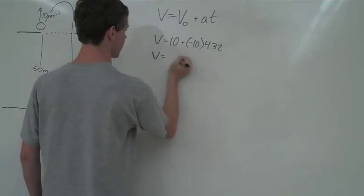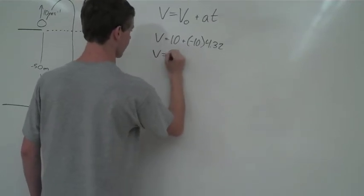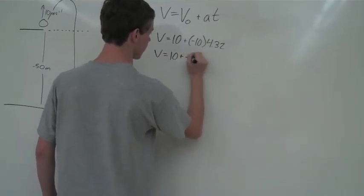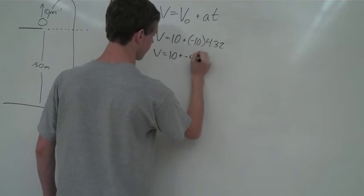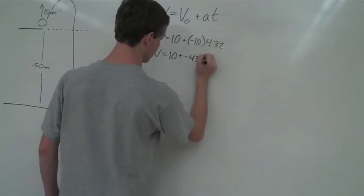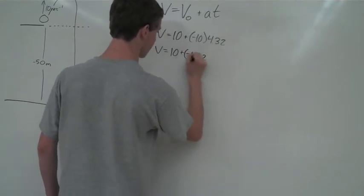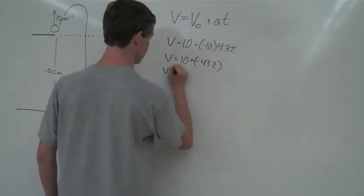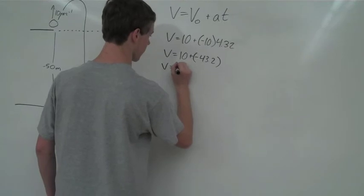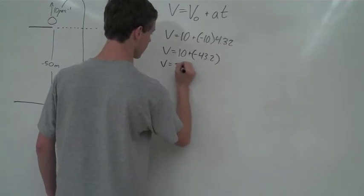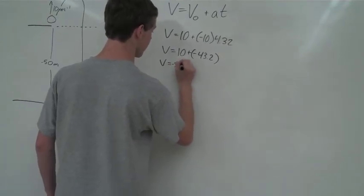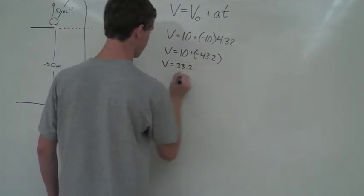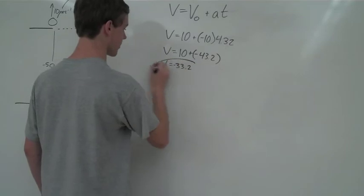Simplifying, we have 10 plus negative 43.2, which gives negative 33.2. So the speed of the stone just before hitting the ground is negative 33.2 meters per second.